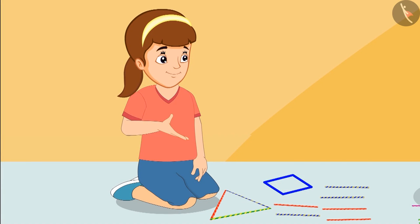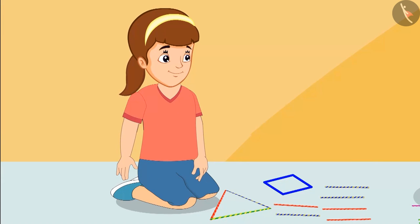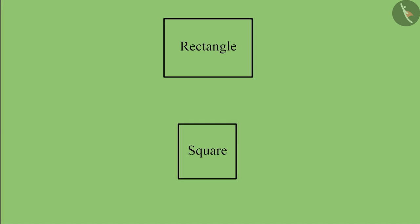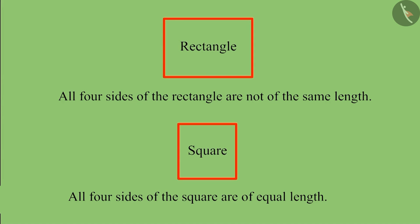This means that this shape is square because it is made of four equal length straws. So children, now you can also distinguish between square and rectangle, right? Both rectangle and square are made up of four sides. But the shape whose four sides are of equal length is called a square.